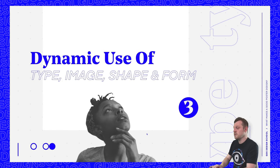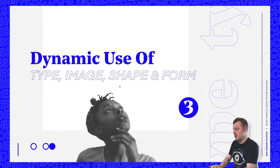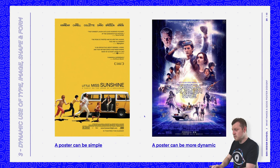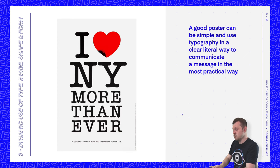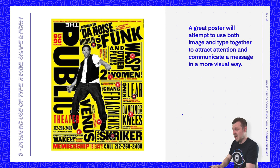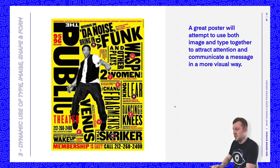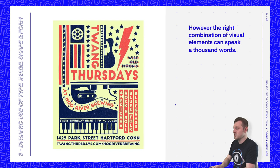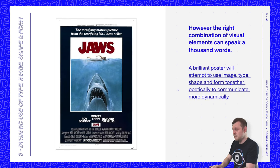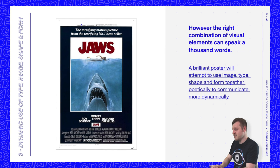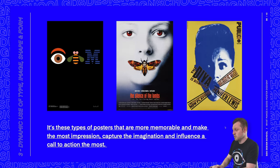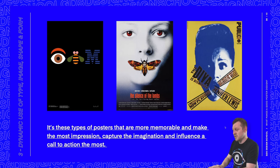Another key factor is dynamic use of type, image, shape, and form. A good poster can be simple and use typography in a clear, literal way to communicate a message. A great poster will attempt to use both image and type together to attract attention and communicate more visually, where the right combination can speak a thousand words. A brilliant poster will use image, type, shape, and form together poetically to communicate more dynamically — and it's these types of posters that are most memorable, capture the imagination, and influence a call to action the most.